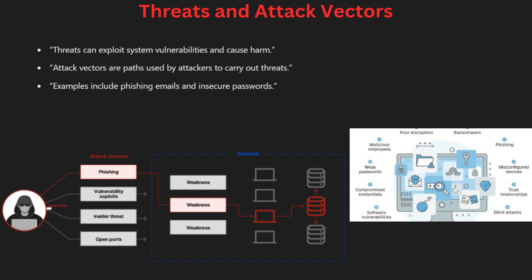A threat is any danger that could exploit a vulnerability and cause harm to a system or data. Attack vectors are the paths or methods that attackers use to carry out these threats. Common attack vectors include malicious emails like phishing, software vulnerabilities, and insecure passwords.